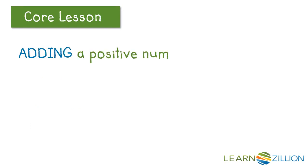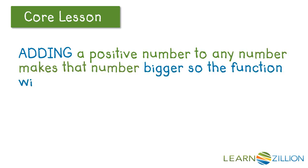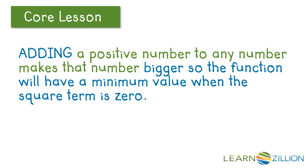Adding a positive number to any number makes that number bigger, so the function will have a minimum value when the squared term is zero.